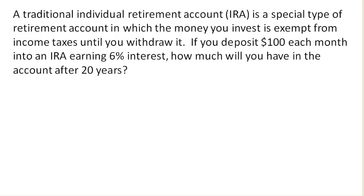A traditional individual retirement account, or IRA account, is a special type of retirement account in which money you invest is exempt from income taxes until you withdraw it. So if we deposit $100 each month into an IRA earning 6% interest, how much will you have in the account after 20 years? We're depositing $100 each month, not just once, so because we're depositing money on a regular basis rather than just once, this is not a basic compound interest problem — this is what's called an annuity problem, or a savings annuity.